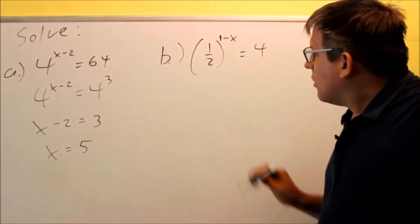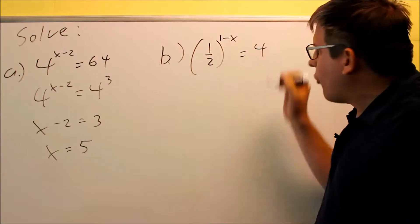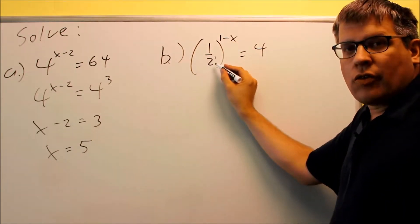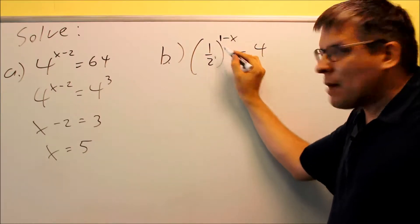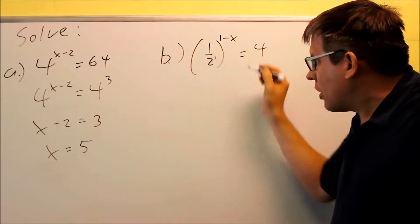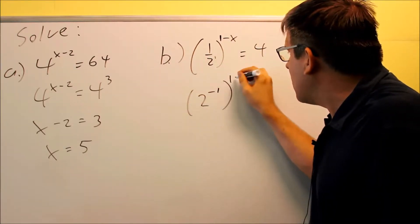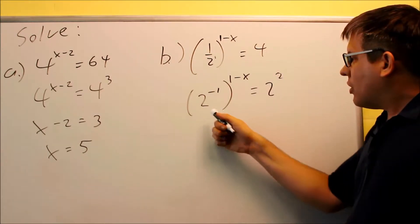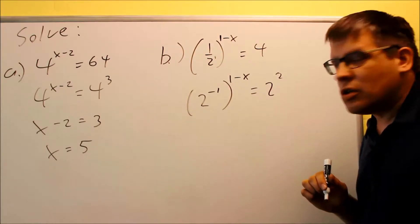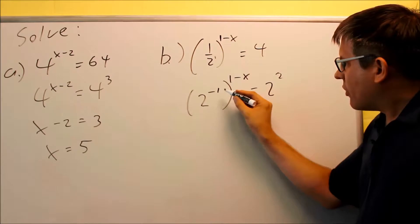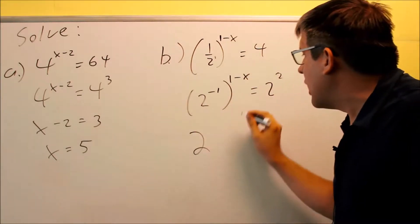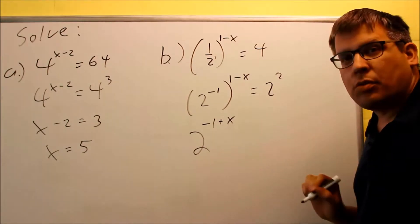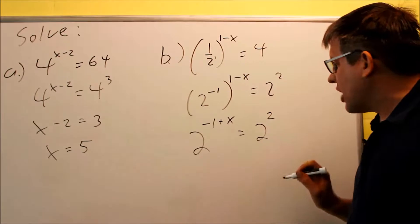For the next one I have a 2 and a 4, and both can be written as powers of 2. The 2 is below the division bar, so moving it above gives a negative exponent — that creates the base of 2 I want. On the other side, 4 can be written as 2 squared. Now both bases are 2. I have a power raised to another power, so I multiply the exponents: negative 1 times x gives negative x, so the left side becomes negative 1 plus x.